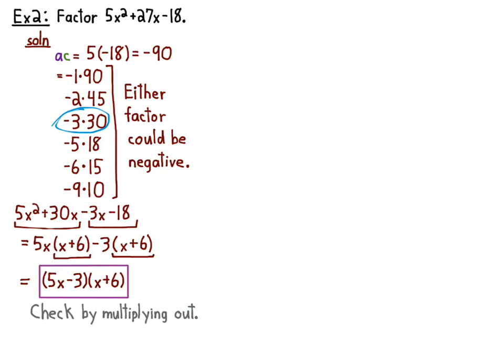Then you check by multiplying everything out. So you've got 5x times x is 5x squared. Yep. Minus 3 times 6 or negative 3 times 6 is negative 18 or minus 18. Yep. Then the middle one, inside and out. So here you've got 30x minus 3x is 27x. Yep. So that checked out. So it's correct.